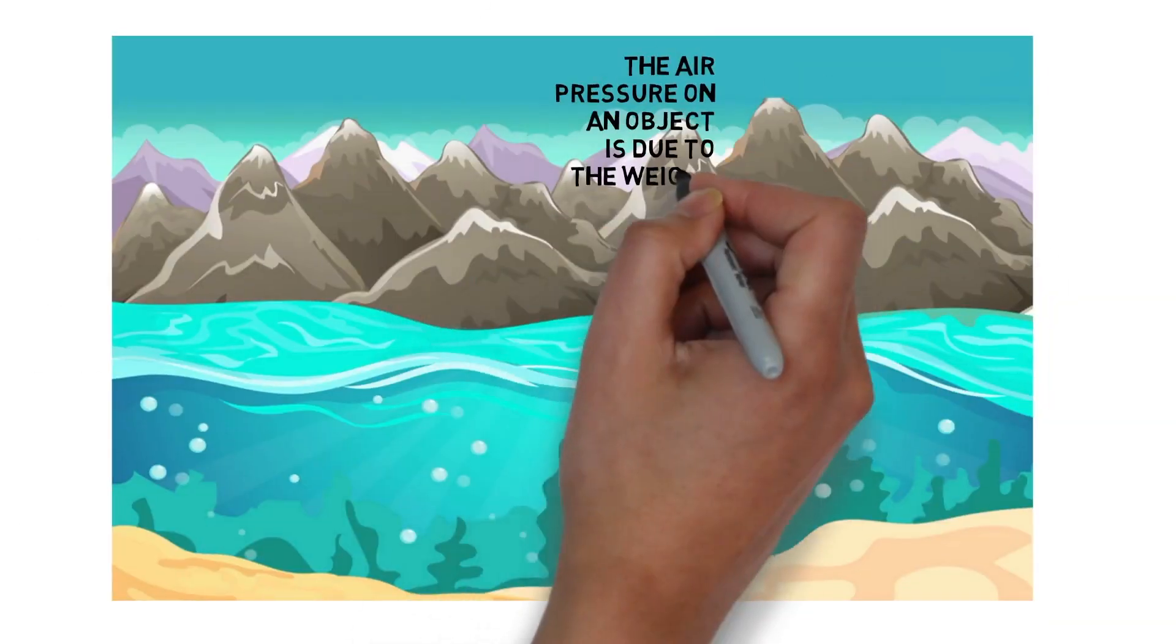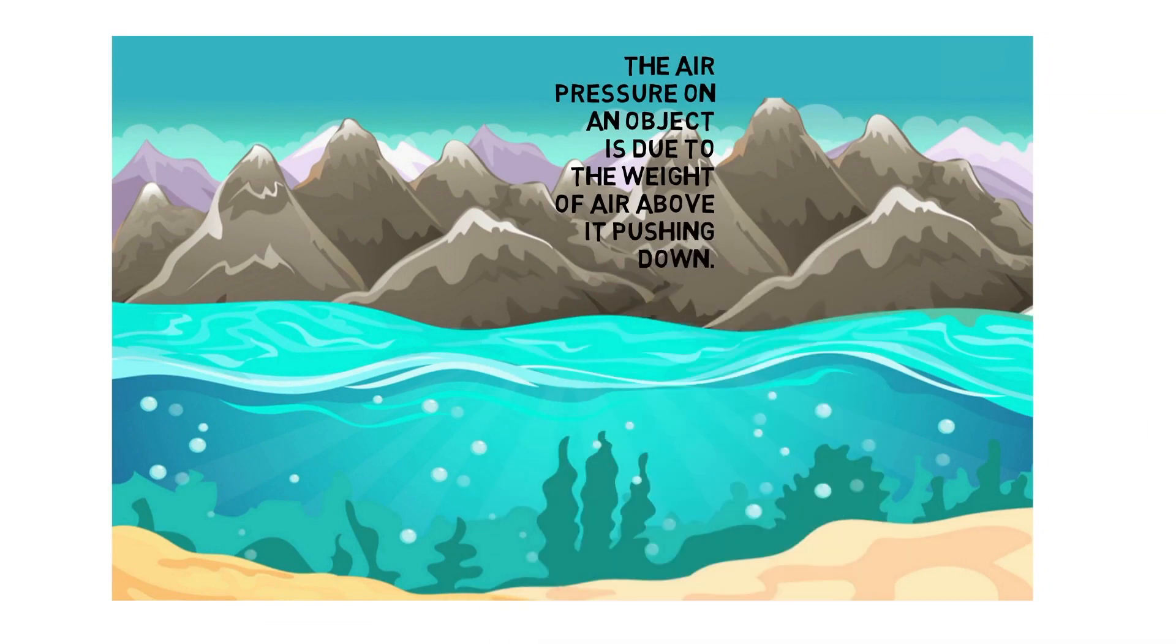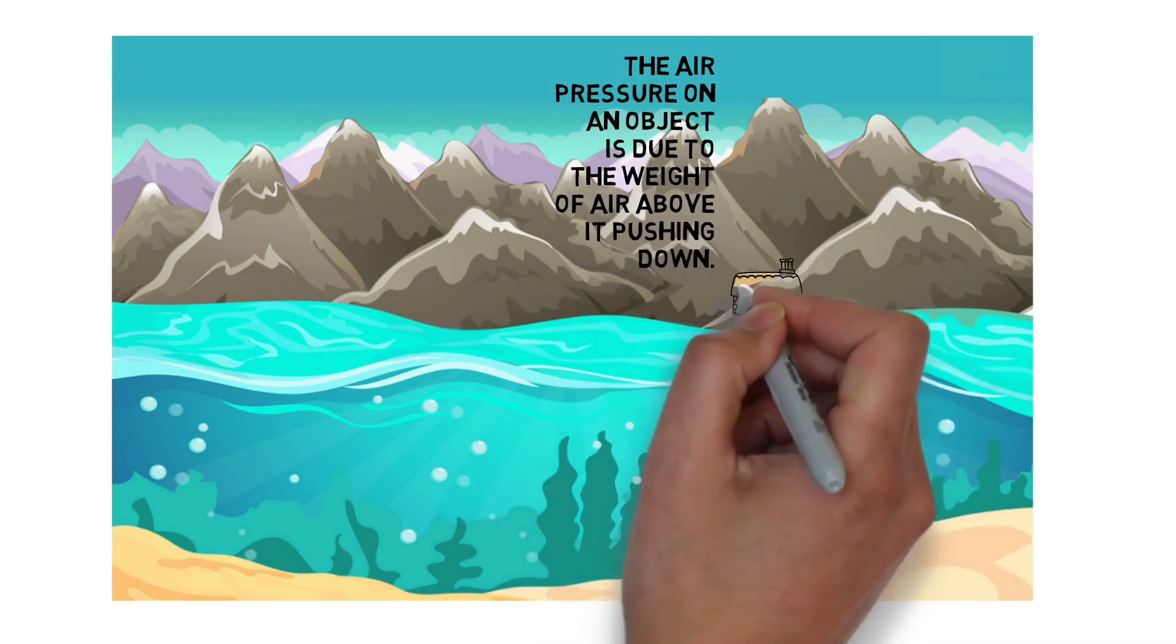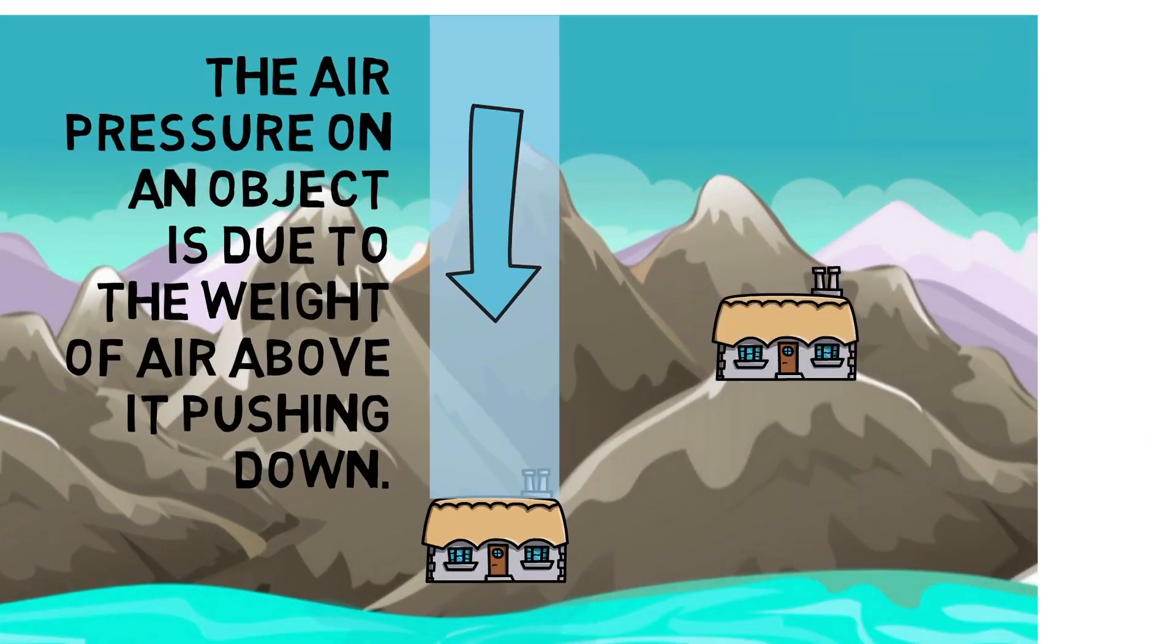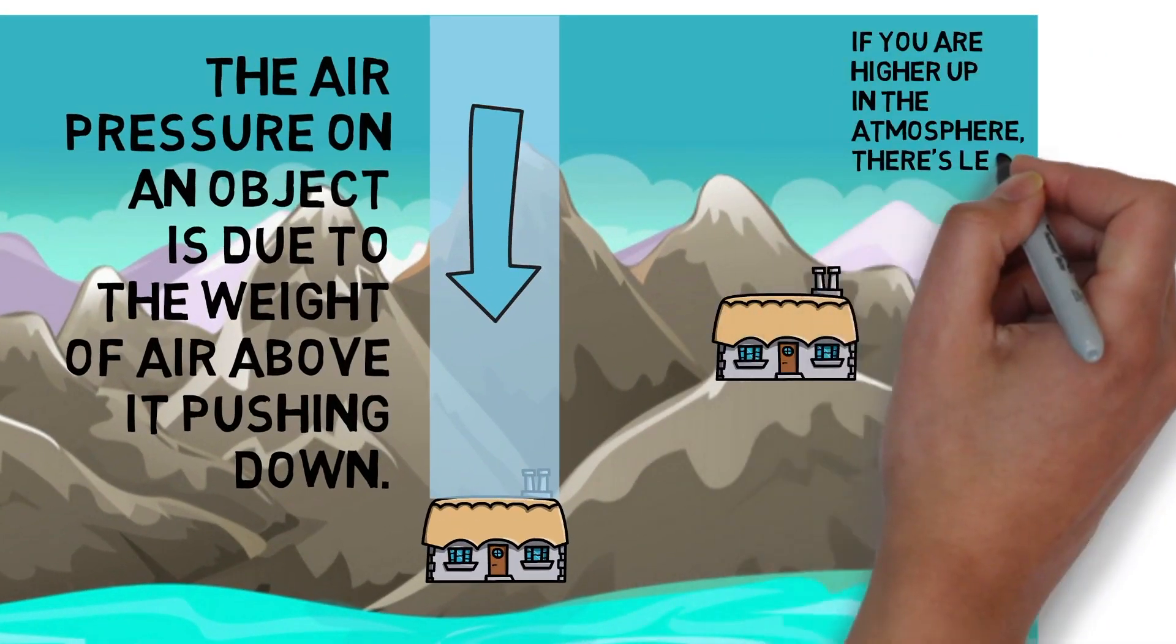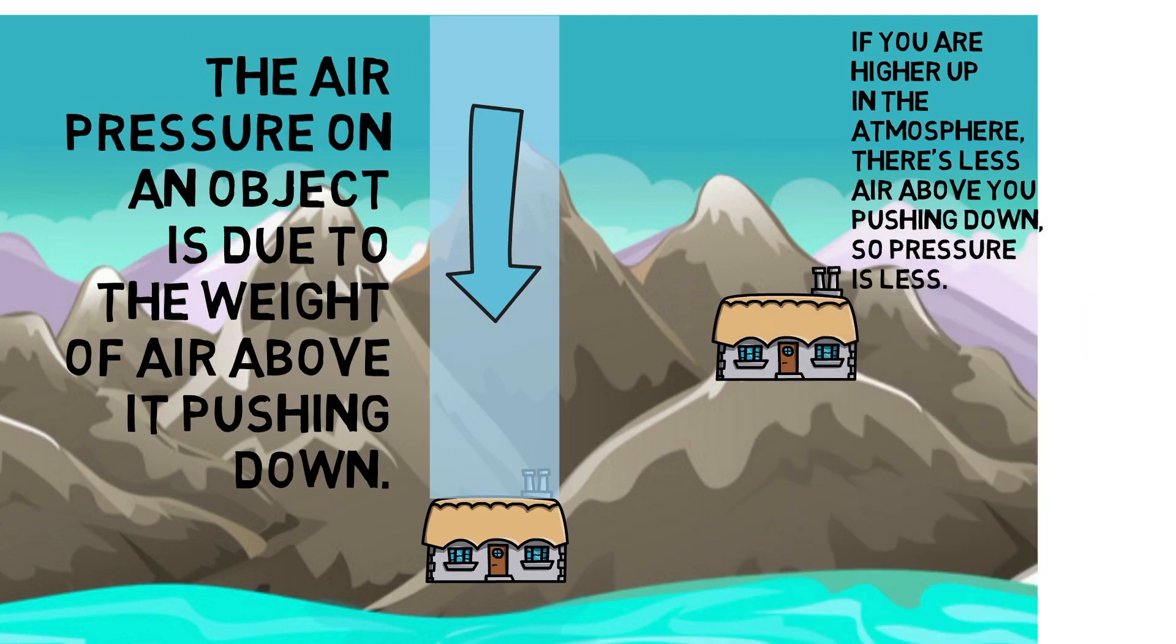The air pressure of an object is due to the weight of air above it pushing down. If you are higher up in the atmosphere, there is less air above you pushing down, so pressure is less.